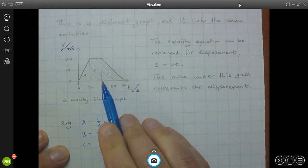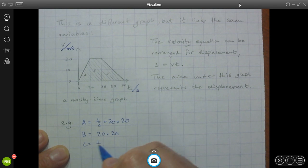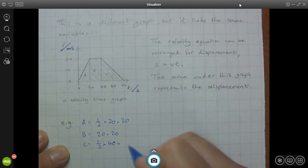And area C is a triangle. So we've got a base, got a wider base now, from 40 to 80. So it's a half times 40 times the height of the triangle, which is 20.